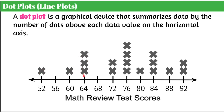Reading this dot plot: three students got a 64, two students got a 72, four students scored 76, one had an 80, three scored 84, one scored 88, and two scored a 92. We can see our minimum and maximum values — two students scored the maximum of 92, and only one scored the minimum.